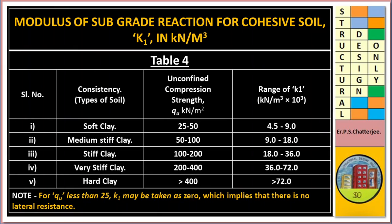Table 4 gives modulus of subgrade reaction for cohesive soil — k₁ values. For soft clay, qu = 25–50 kPa, k₁ = 4.5–9. For medium stiff clay, qu = 50–100, k₁ = 9–18. For very stiff clay, qu = 200–400, k₁ = 36–72. For hard clay, qu greater than 400, k₁ greater than 72. For qu less than 25, k₁ may be taken as 0, implying there is no lateral resistance.